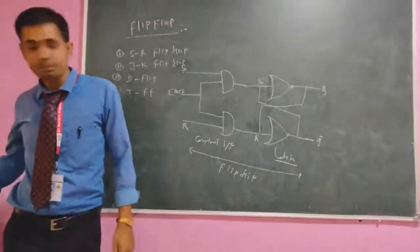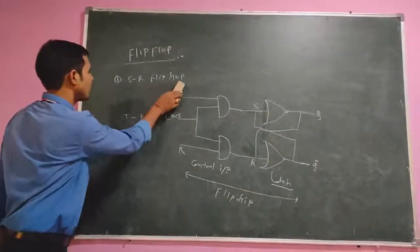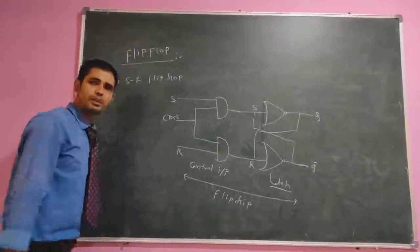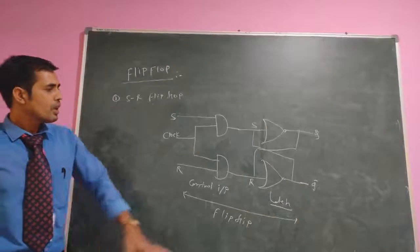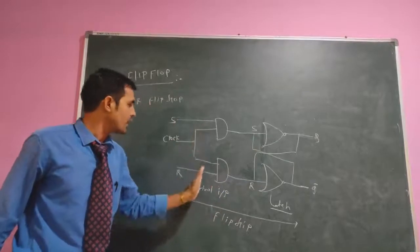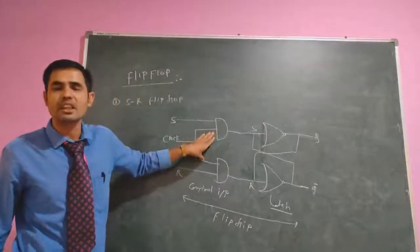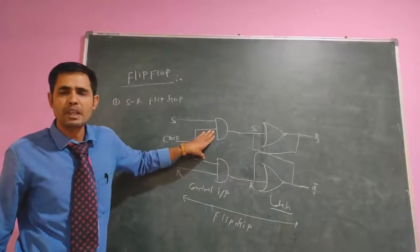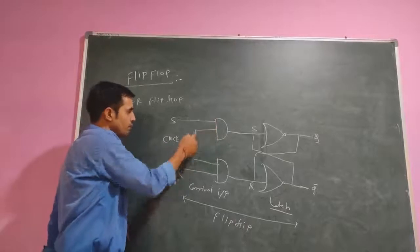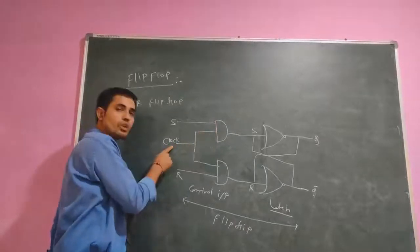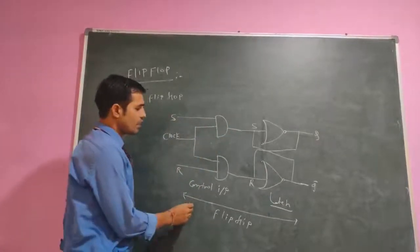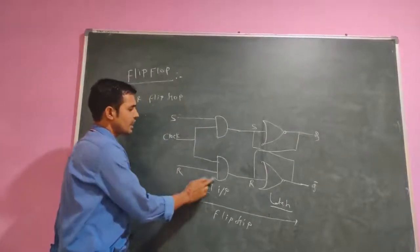First of all we go to the SR flip-flop. As per our basic definition, we take one SR latch, and we add two AND gates as additional control input. One input of each AND gate is the clock input, and the other input is connected to S and R respectively. This SR latch directly, or if we go to graphical representation, this is the SR latch connected to the AND gates.